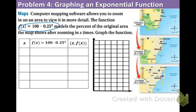The function f of x equals 100 times 0.25 to the x models the percent of the original area the map shows after zooming in x times. Graph the function. So similarly to the last one, we have a table, we have a graph. Just take a minute and just look at the picture on the right. It looks like we're in Florida, which is nice. So the original area is in the top right. The zoomed in one time is in the middle right. And the zoomed in two times is in the bottom right.